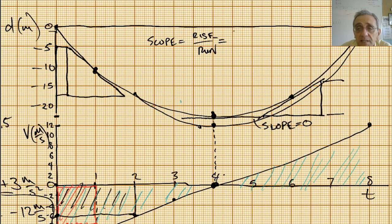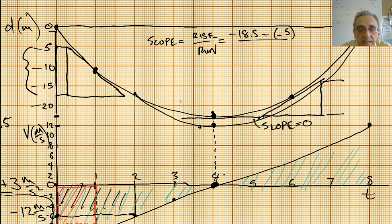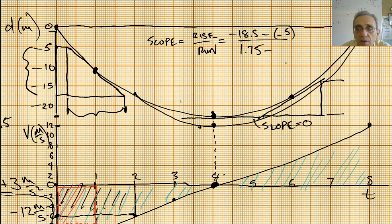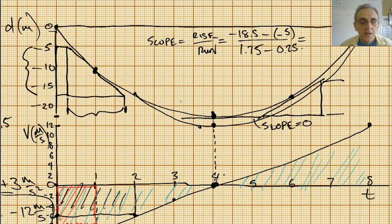Okay, now if I draw the triangle — there's my triangle. Notice: what are those two points? That point is at about negative 18.5, and the other is at negative 5. So the slope is equal to rise over run. I need to be careful because these numbers are actually negative. So it's negative 18.5 minus negative 5, divided by the run, which is 1.75 minus 0.25. Plugging this through my calculator gives me an answer of negative 9.